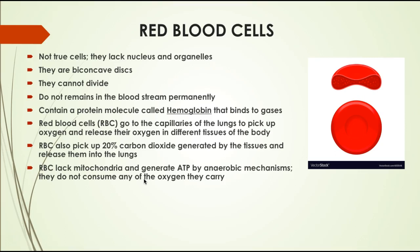Red blood cells are not true cells — they lack a nucleus and organelles. They are biconcave discs with a dent in the middle. There was a nucleus at one point, but before red blood cells enter the bloodstream their nucleus is removed. They cannot divide or go through mitosis, so they are constantly being generated and also constantly being degraded. Because they can't repair themselves or divide, the body must get rid of them after a while.